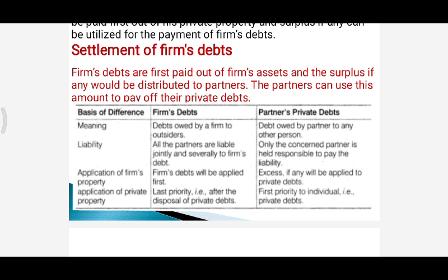Next is application of private property: in case of firm's debts, the partner's private property will first be utilized for paying off his own private debts, and after payment of private debts the partner's personal property can then be used for paying the firm's debts. The first priority of any private property is always towards private debts. So all this was the theory part in the chapter of dissolution of a partnership firm. I hope all of you have understood the topic. Thank you and have a nice day.